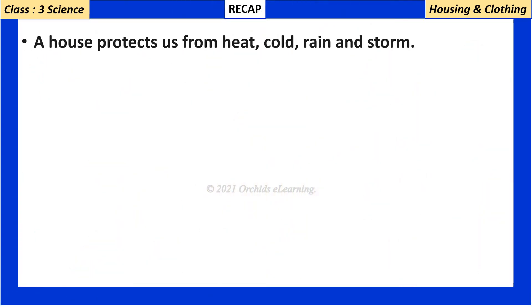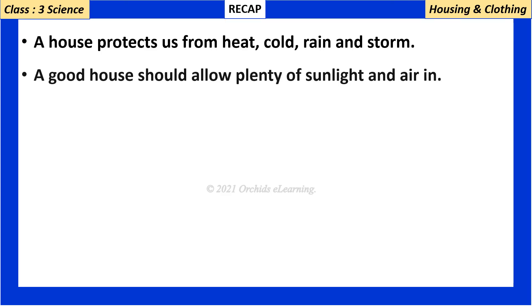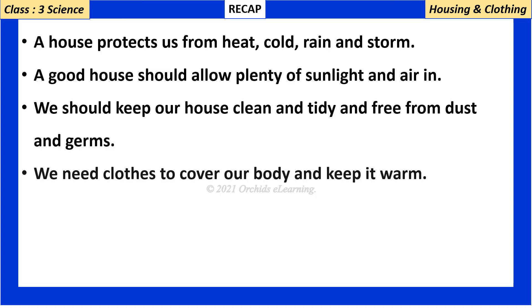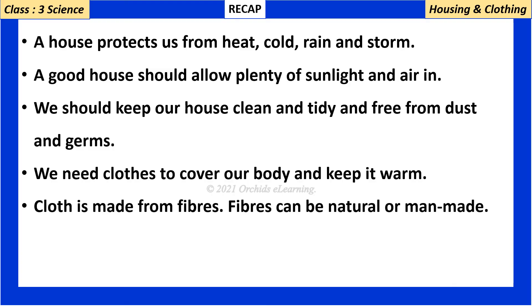Summary: A house protects us from heat, cold, rain, and storm. A good house should allow plenty of sunlight and air in. We should keep our house clean and tidy and free from dust and germs. We need clothes to cover our body and keep it warm. Cloth is made from fibers, which can be natural or man-made.